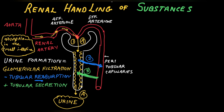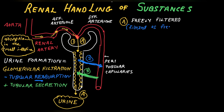Now consider a group of substances called Group A, which are filtered and excreted unchanged in the urine. The word used is 'freely filtered' — that is, filtered as freely as water. Freely filtered means just as water passes through a net; filtration occurs across the glomerular capillaries.